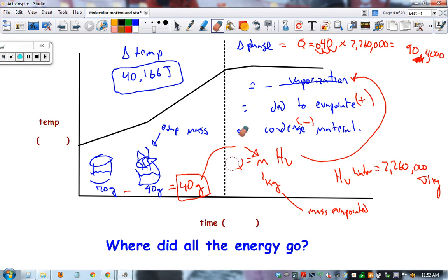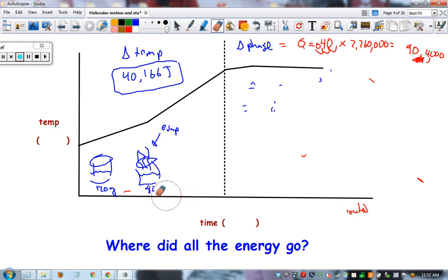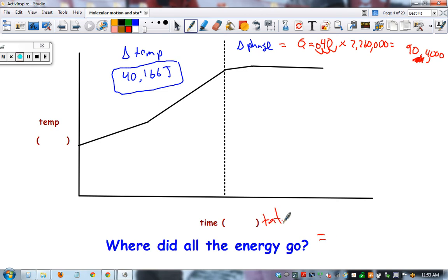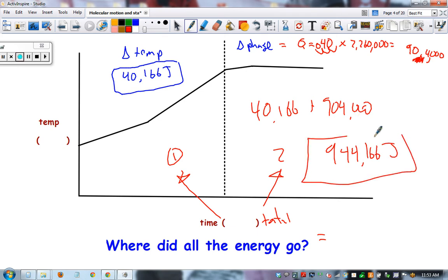We spent 40,166 joules heating it up and then 904,000 joules evaporating. So the total is part one plus part two. It equals 944,166 joules. That's the one math problem you'll be asked to do for this topic.